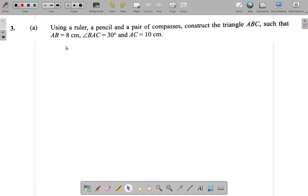Question 3a. Using a ruler, a pencil and a pair of compasses, construct the triangle ABC such that AB is 8 centimeters, angle BAC is 30 degrees, and AC is 10 centimeters.